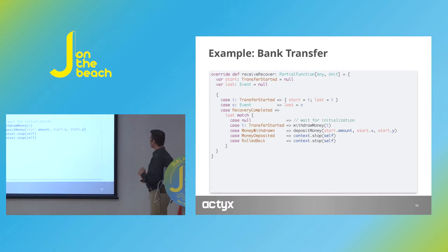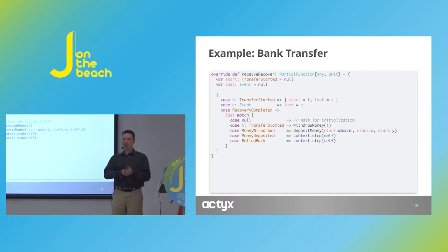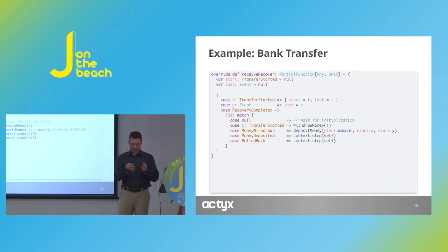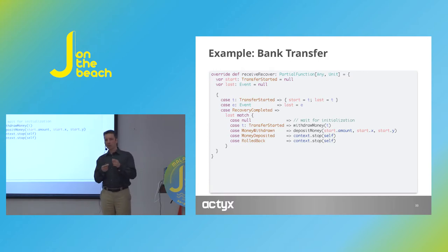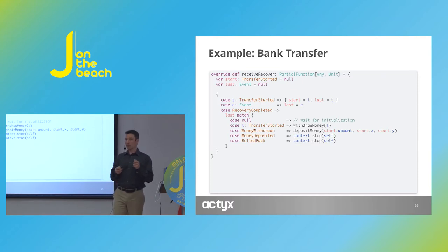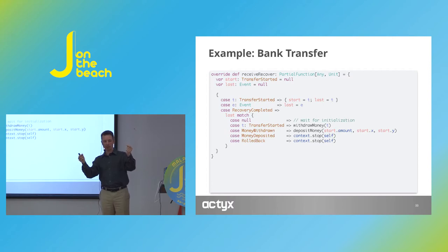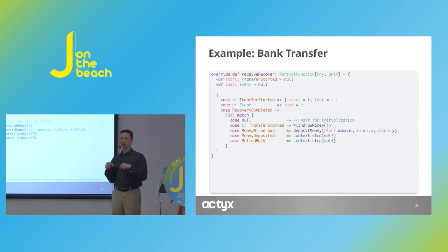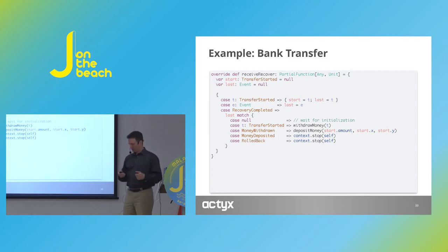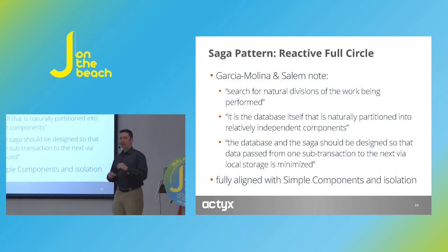The funny thing is when reading this 1987 paper, I smiled at a few places. They write: 'Search for natural divisions of the work being performed.' The context was a single-core, single-CPU system running a single-threaded database — not a distributed system. The problem was that a long-running transaction would block all other clients. So you search for natural partitions in your data, group them, and make sub-transactions for these natural groups — that sounds a lot like microservices. 'The database itself is naturally partitioned into relatively independent components' — that's exactly the statement that a microservice owns its data.